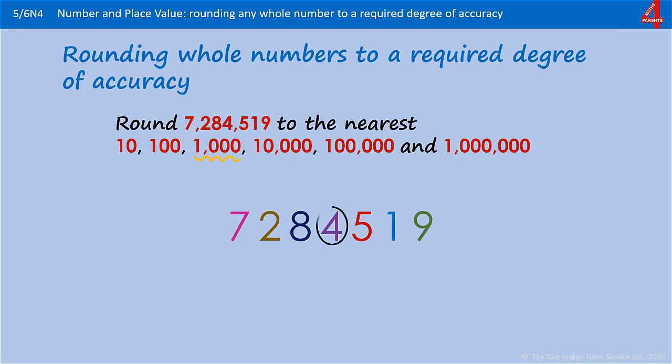Locate the thousand, which is four. The digit that will decide what happens to that 4,000 represents 500, so we're going to round up. And that becomes 7,285,000.